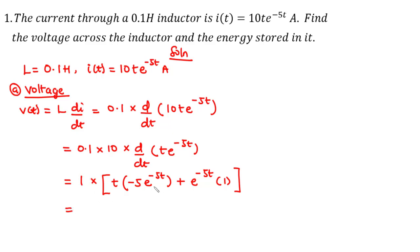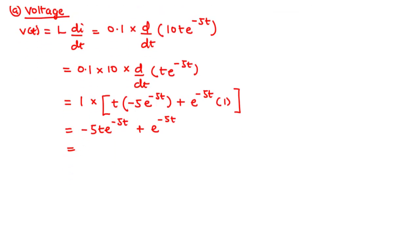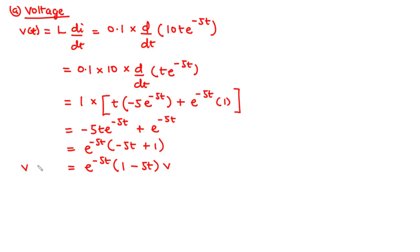Multiplying through, we get −5·t·e^(−5t) + e^(−5t). Since e^(−5t) is common to both terms, we factor it out: e^(−5t)·(1 − 5t). So the voltage v(t) = e^(−5t)·(1 − 5t) volts — this is the voltage across the inductor.